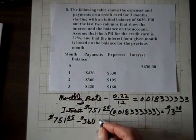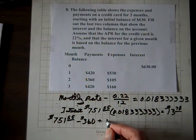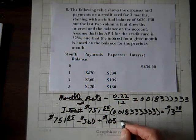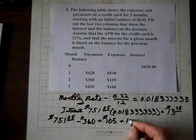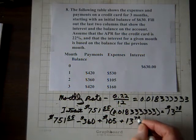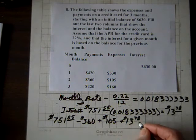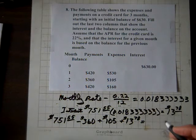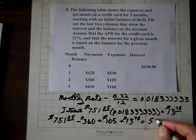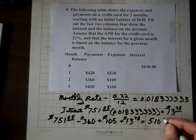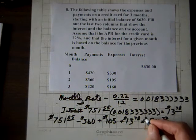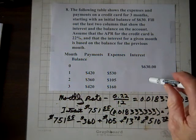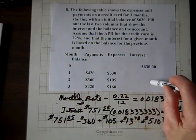So, but we have additional expenses of $105, plus we have this interest that we have to add to it, which is $13.78. And the sum of those values is $510.33. $510.33. And so that will be the balance for the second row.